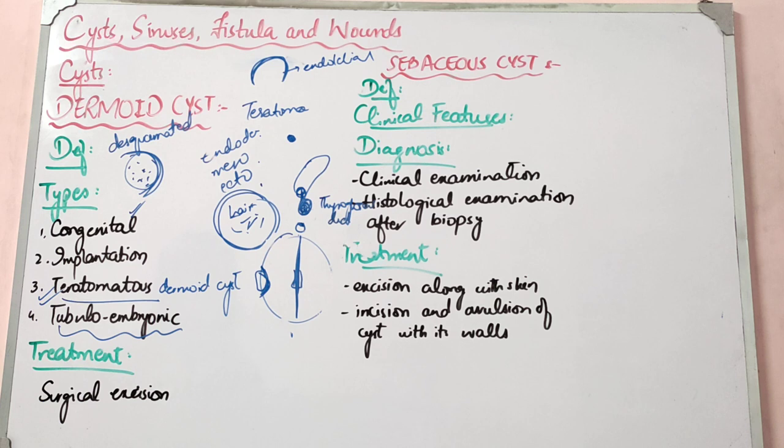The dermoid cyst treatment is simple: you excise the whole cyst surgically. Whether it is thyroglossal or implantation type, it is not a major problem — surgical excision is sufficient. Now we come to sebaceous cysts, which is also a very common scenario.